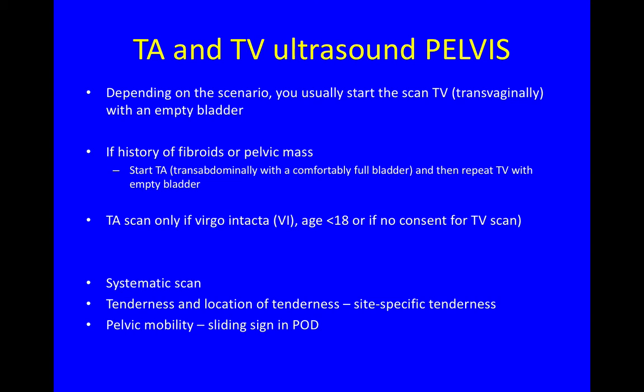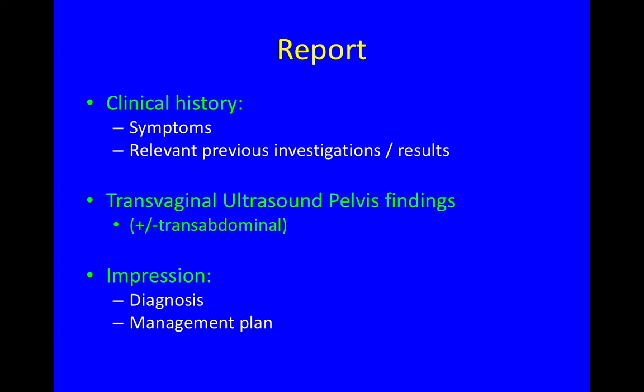Only perform a transabdominal scan — not transvaginal — if the patient is virgo intacta, if she's never had intercourse, if she's young, or if she does not consent for a TV scan. Do your scan systematically, but also look for tenderness and the location of tenderness, which is called site-specific tenderness. And look for pelvic mobility, including the sliding sign in the pouch of Douglas.